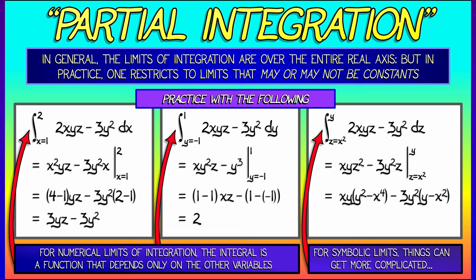That gives xy times (y² minus x⁴) minus 3y² times (y minus x²). With a little bit of algebra, that yields xy³ minus x⁵y minus 3y³ plus 3x²y². Now that's kind of complicated — maybe we should stick to a simpler example.